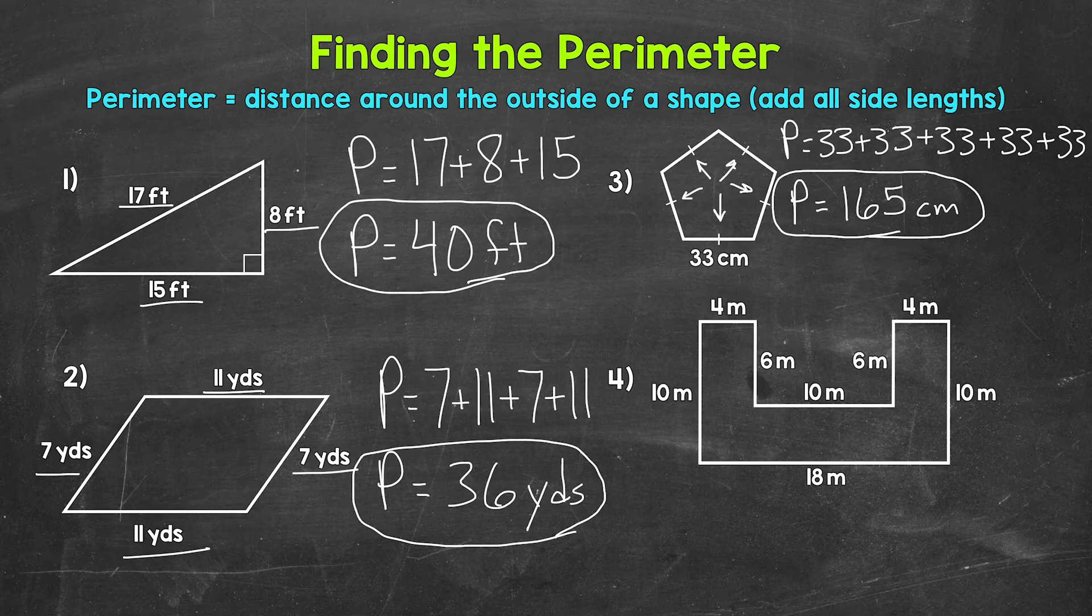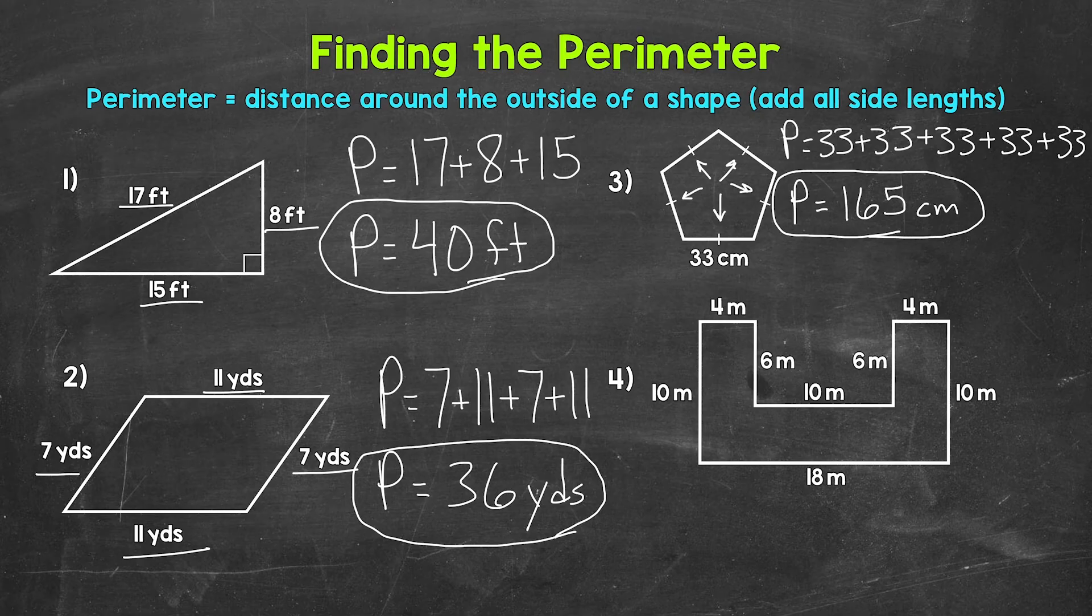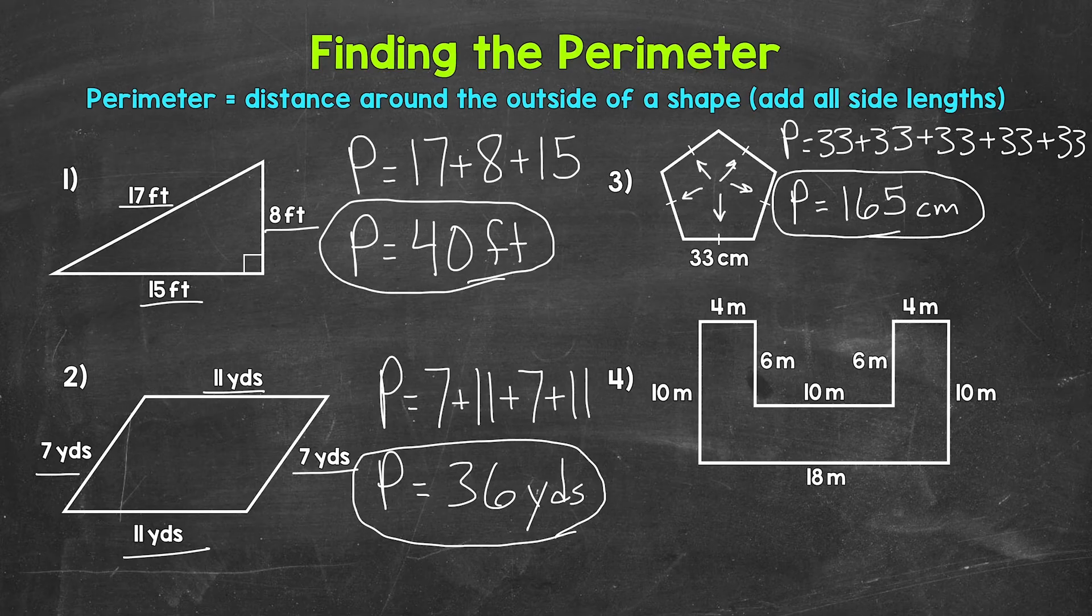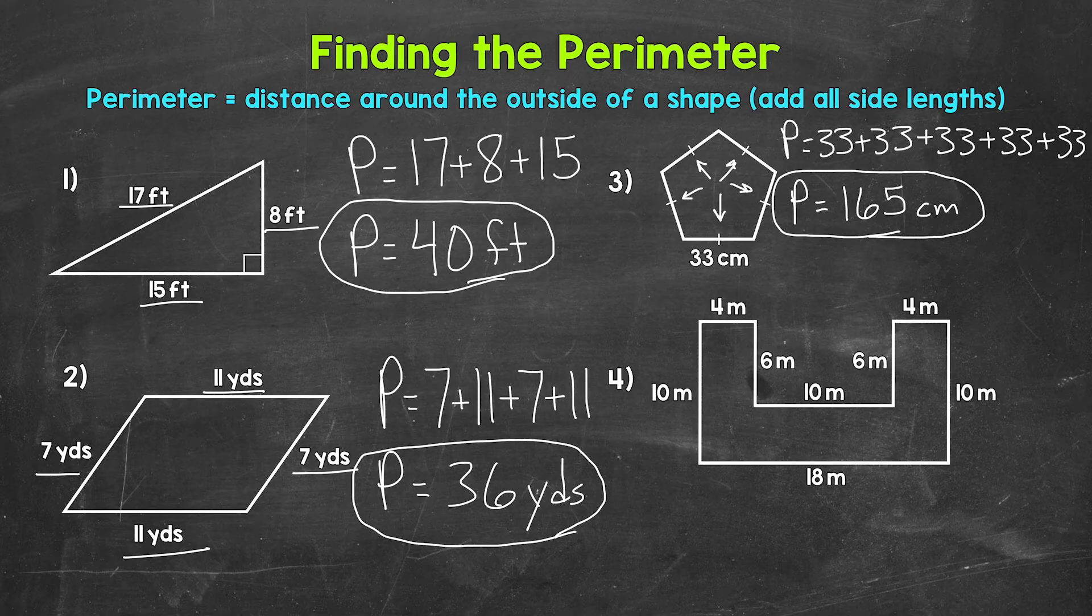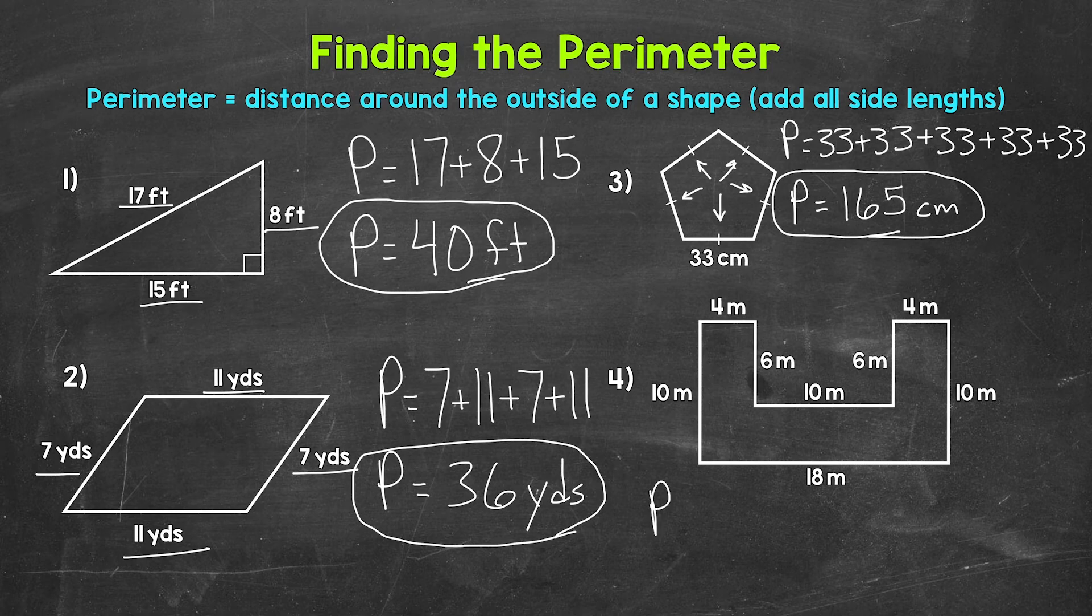Lastly, let's move on to number four, where we have a composite shape. Let's add all of the side lengths to find the perimeter. Now here, we need to be careful to include all of the sides and not skip anything, or count any of the side lengths twice. So I'm going to cross off as we go along. The perimeter equals,